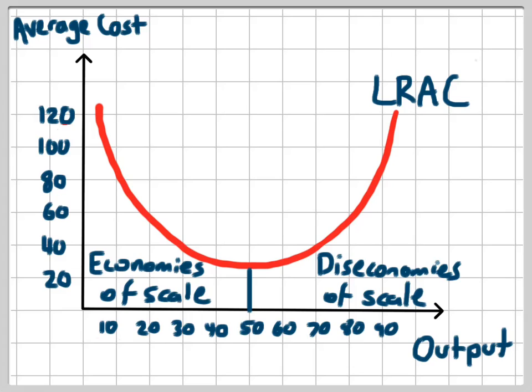From the output of zero up until 50, the firm is experiencing economies of scale. And once we reach 50, we're at the optimum plant size. Once we move past the optimum plant size, the business starts experiencing diseconomies of scale.